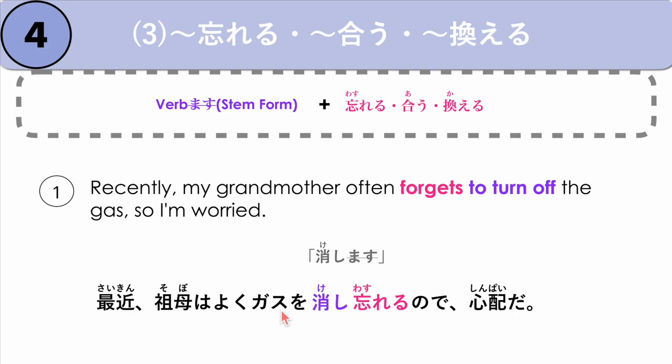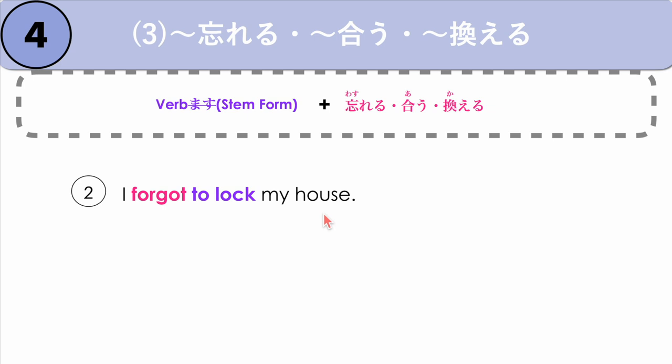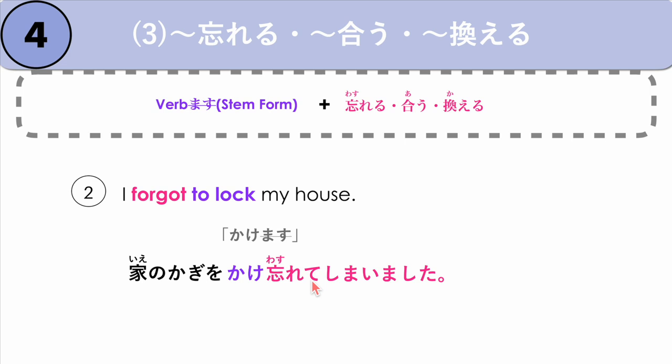Next example: I forgot to lock my house. Ie no kagi — my house key — to lock something is kagi wo kakemasu. Our verb is kakemasu. We get the stem kagi wo kake, plus to forget — or in this case, forgot: wasurete shimaimashita. Shimaimashita indicates that the speaker regrets the action. Ie no kagi wo kake wasurete shimaimashita.